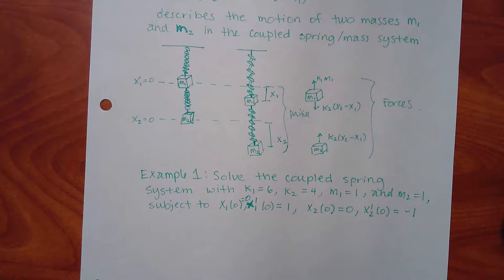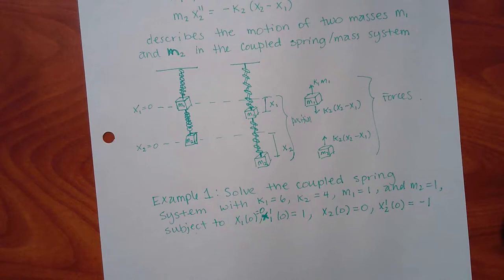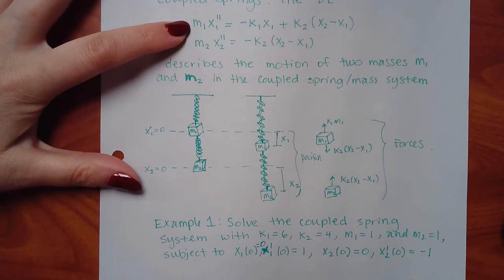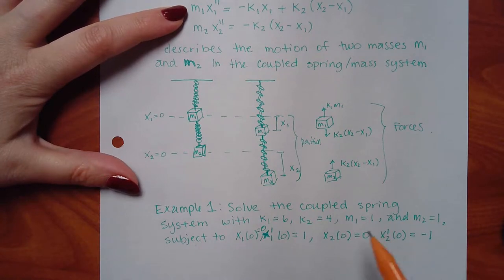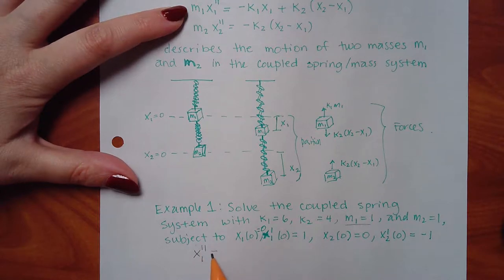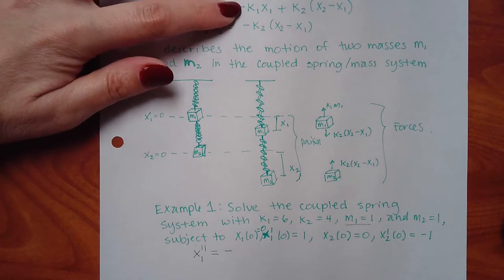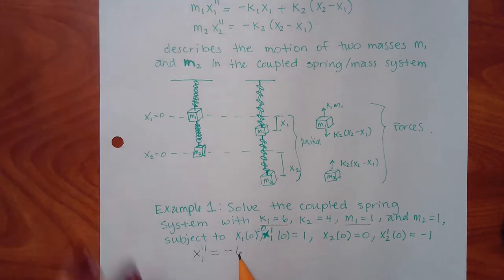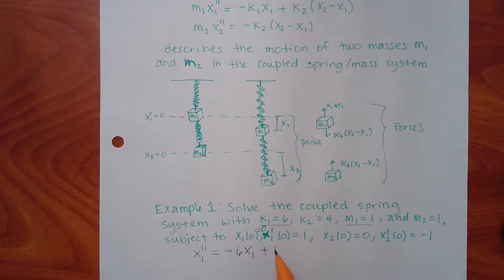The only thing different is the very beginning, because I have to plug in my constants into that formula. Once I plug those constants in, then I have the DE. All the other problems in the homework already have the constants in there, so the DE is already made up. So I'm going to put these numbers in. For the first equation, I have M1 times X1 double prime — M1 is 1, so I write X1 double prime — then minus K1, which is 6, times X1, plus K2, which is 4, times X2 minus X1.